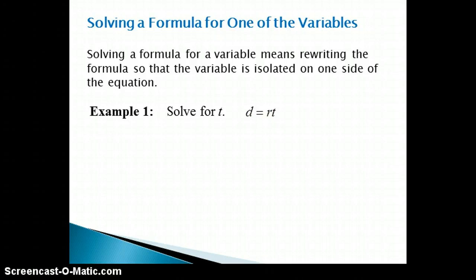To illustrate, let's look at the formula D equals RT, which is the formula for motion that says the distance traveled is equal to the rate of speed multiplied by the time traveled. We want to solve this formula for T. In other words, we need to isolate the T on one side of the equation.